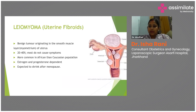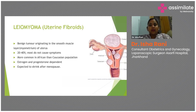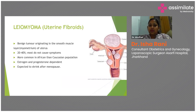The most common finding seen on ultrasound is uterine fibroids, also called leiomyoma — a benign tumor originating in the smooth muscle layer of the uterus. Around 20 to 40 percent of the time it causes no symptoms and is an incidental finding. It is more common in the African population than in the Caucasian population.